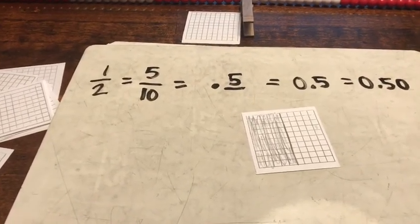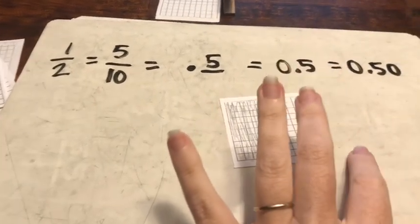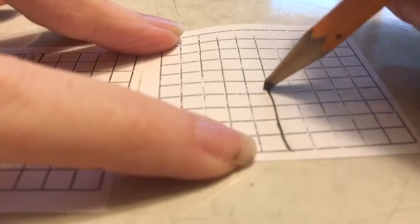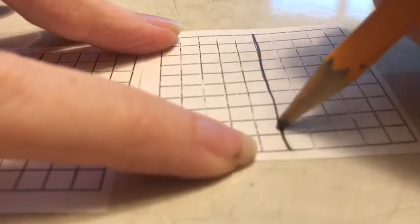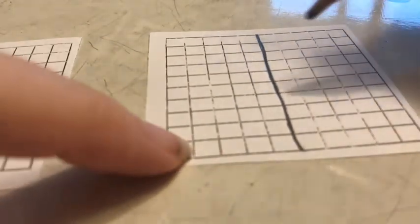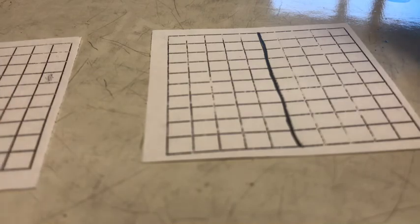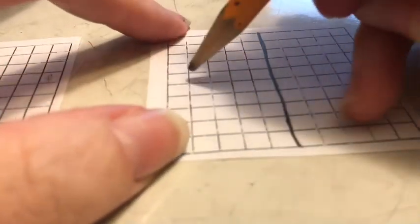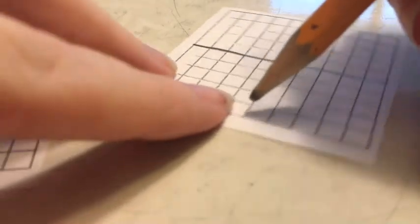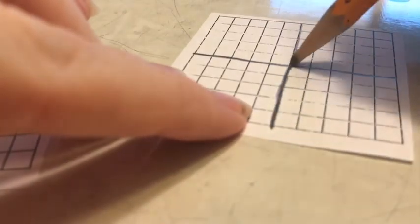There is your decimal equivalent for one half. Let's go into fourths. I'm going to use that half to help me understand the fourths. If I wanted to make this into fourths, I need four equal parts that make the whole. If I take a half and chop each half in half again, I can see in each half there is one fourth.